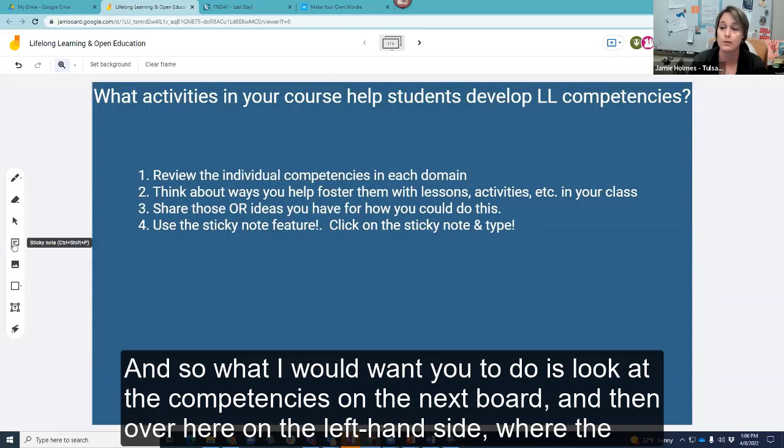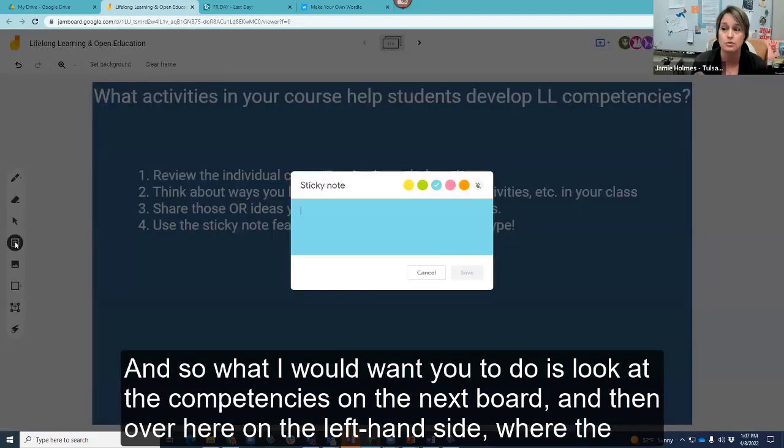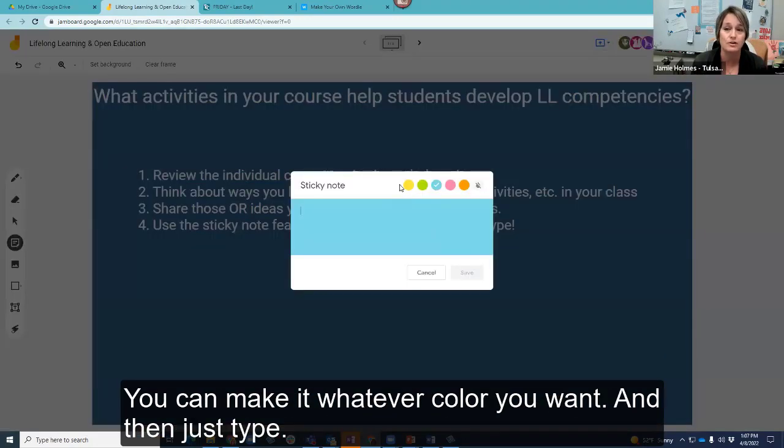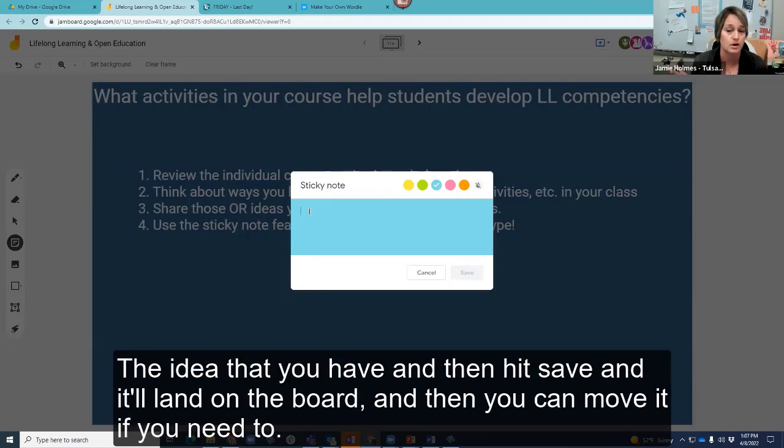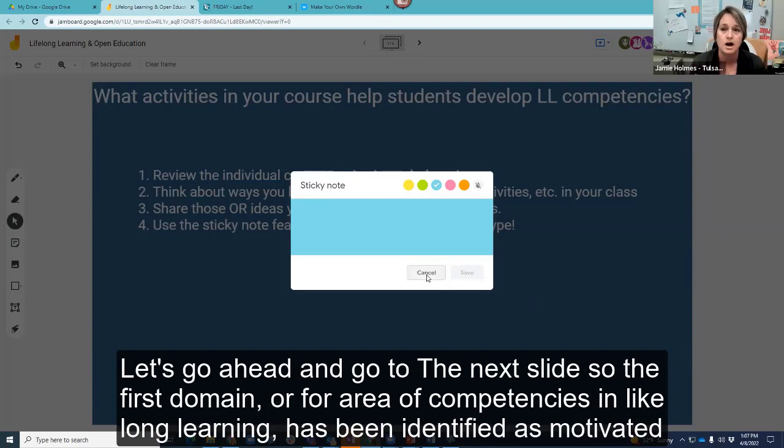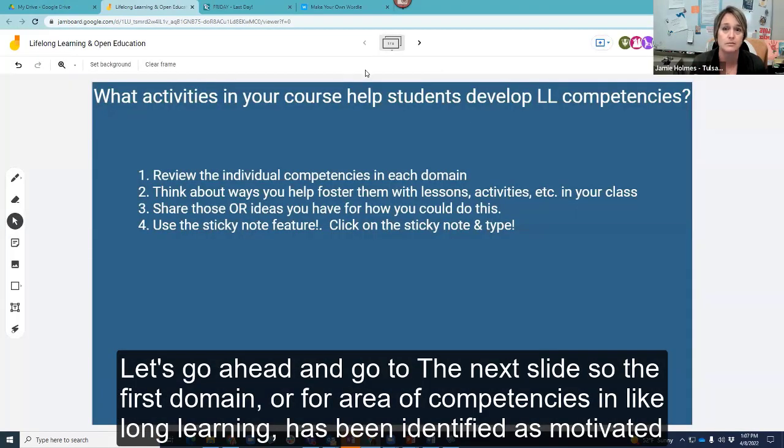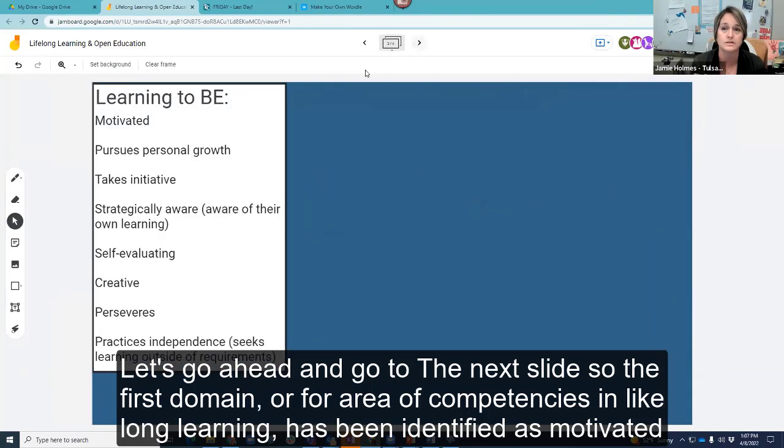And so what I would want you to do is look at the competencies on the next board. And then over here on the left hand side where the sticky note is, you can make it whatever color you want, and then just type the idea that you have and then hit save and it'll land on the board and then you can move it if you need to.